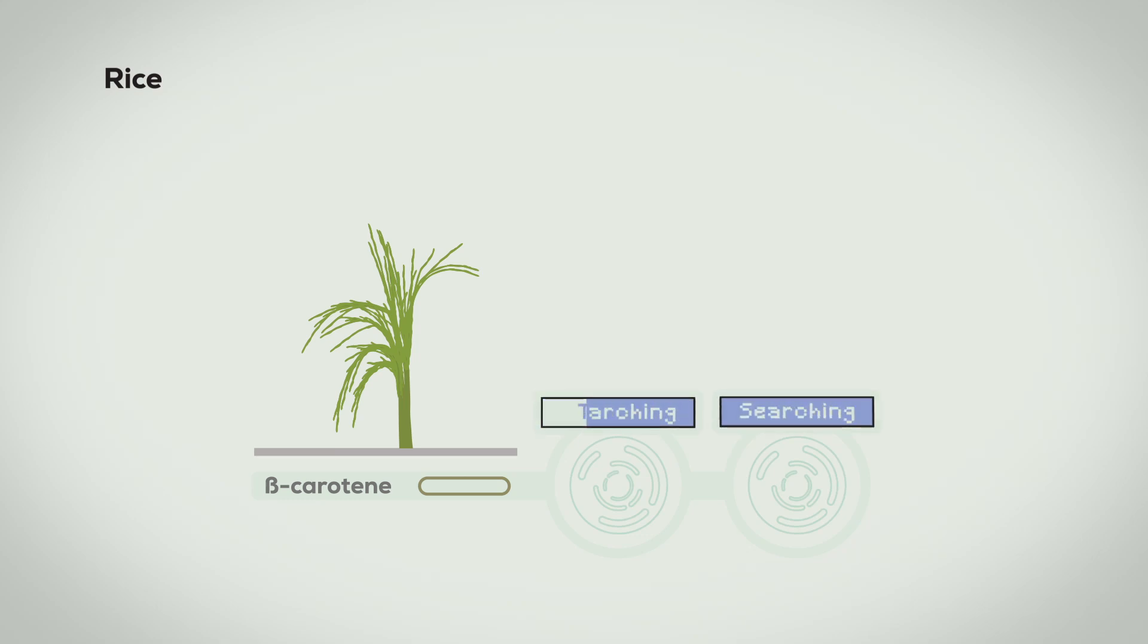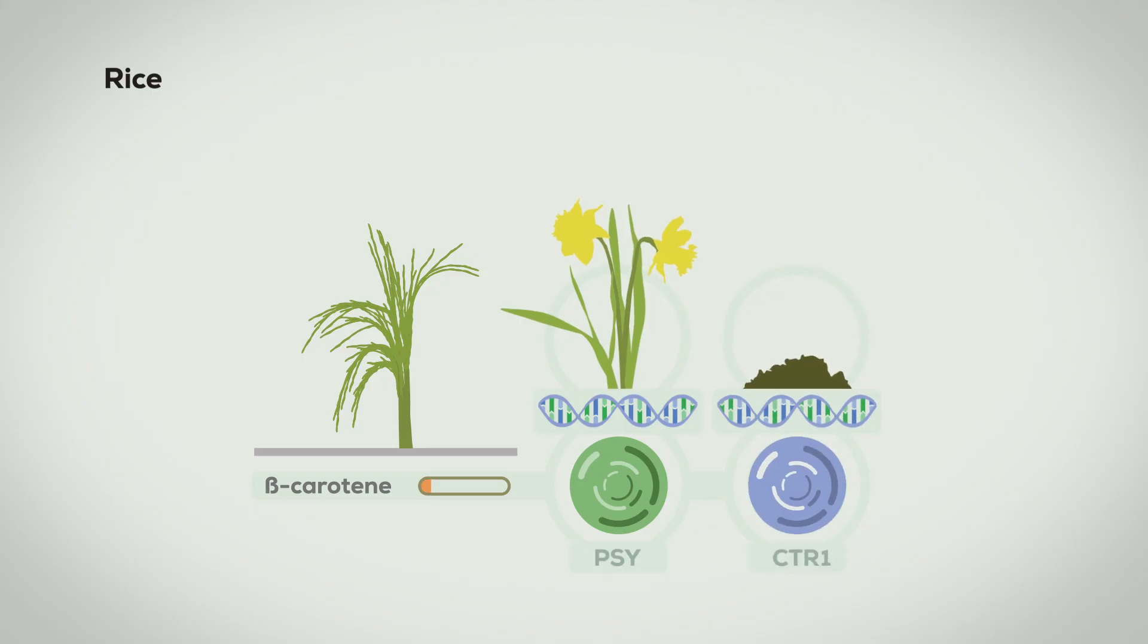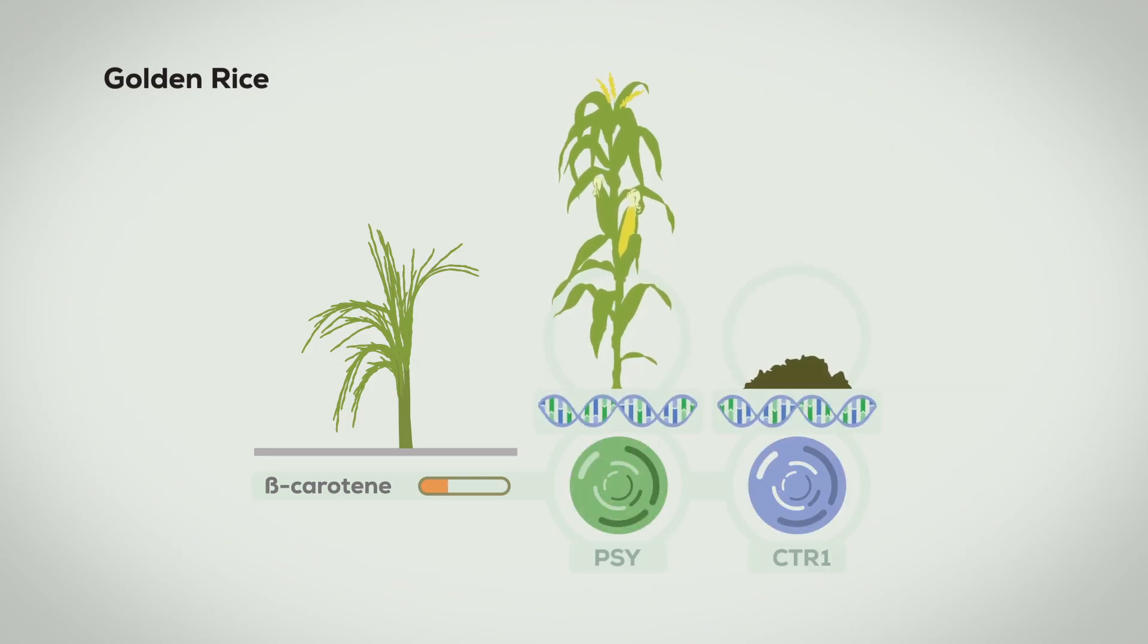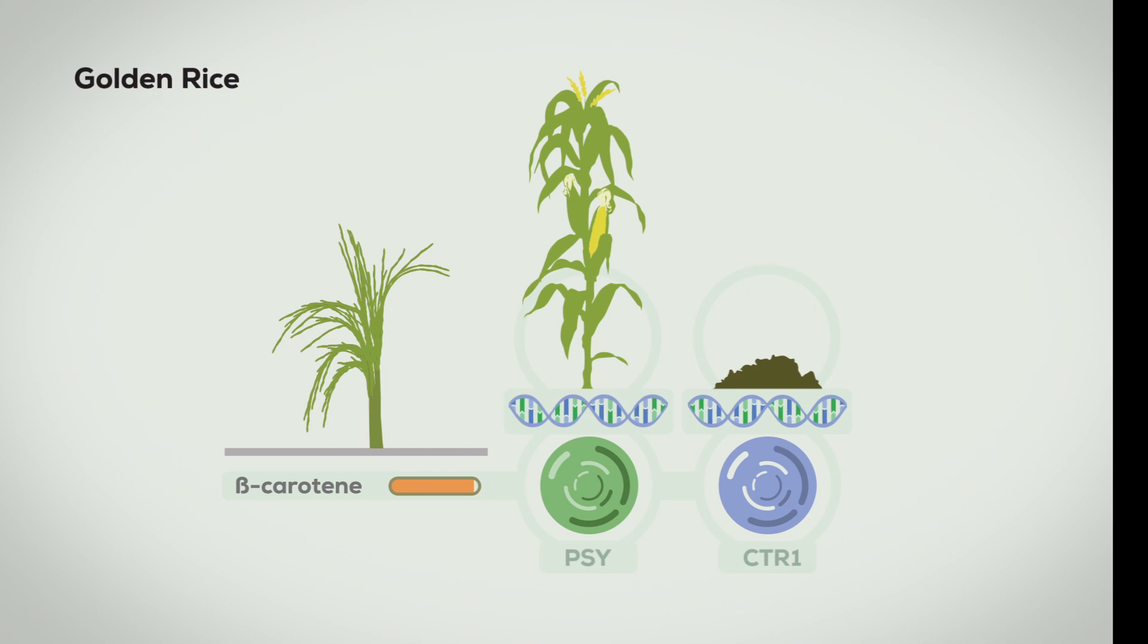In the 90s work began on filling these gaps with the hope of eventually eliminating the disease. The missing genes were found in daffodil and soil bacterium genomes and its new crop was called golden rice. However, the amount of beta-carotene it produced was a little low so the scientists continued their work. By 2005 the daffodil gene had been replaced with the corn version increasing beta-carotene 23 times. This was a breakthrough in the fight against vitamin A deficiency but it's not gone smoothly.